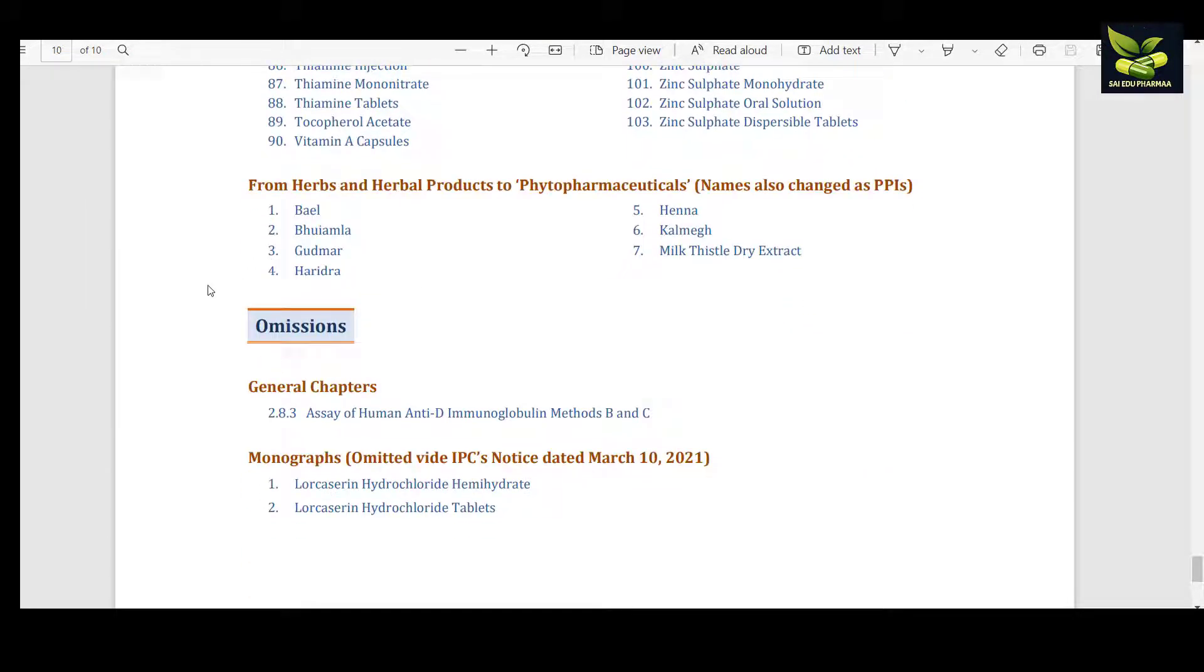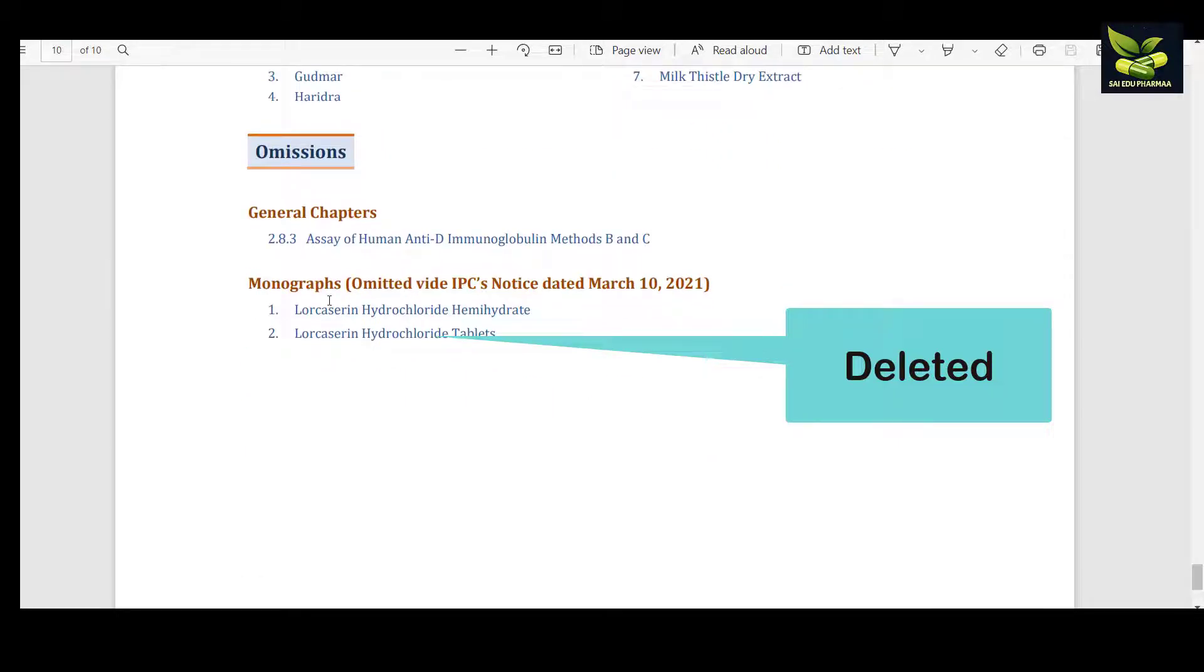These are omissions, meaning these have been deleted. General chapter 2.8.3 assay of human anti-D immunoglobulin methods B and C have been deleted. In monographs, omitted with IPC's notice dated March 10, 2021: Lorcaserin hydrochloride hemihydrate and Lorcaserin hydrochloride tablets - these two have been deleted.